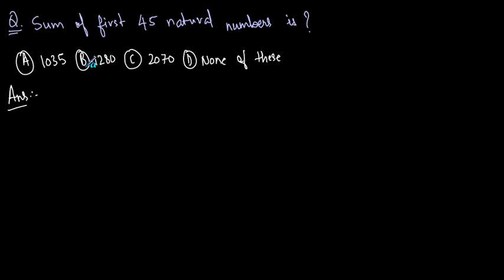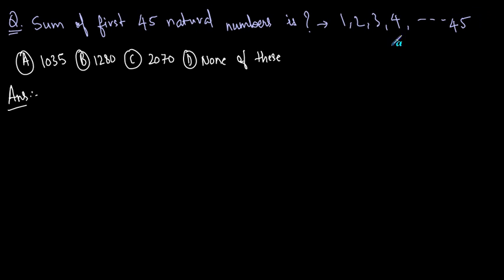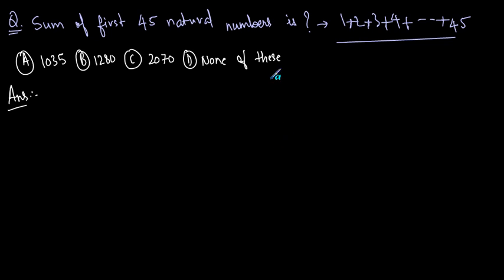Now let's solve one more question: what is the sum of first 45 natural numbers? First 45 natural numbers are 1, 2, 3, 4, and so on till 45. So this would be 1 plus 2 plus 3 plus 4 plus... until you get to 45. This again is an arithmetic progression — put values into the formulas and find the answer.